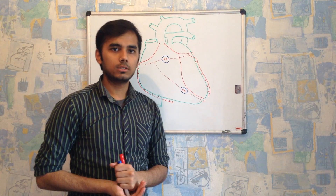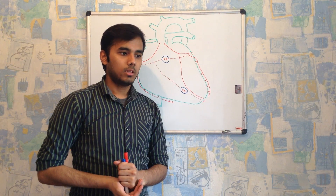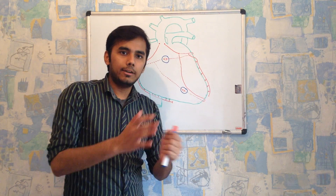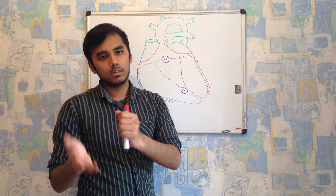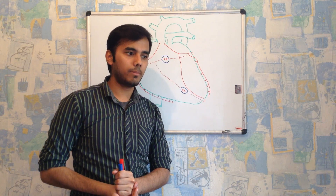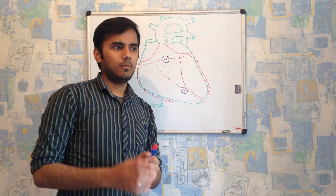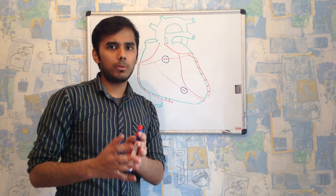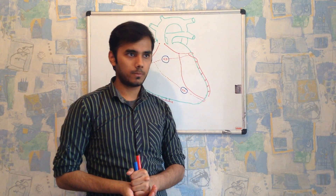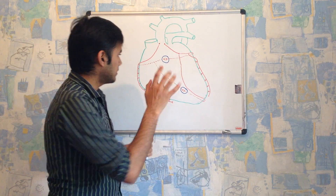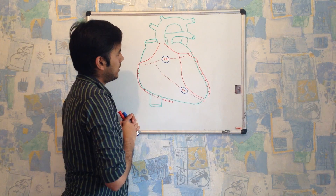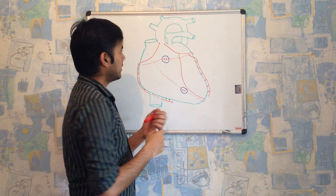One important thing to discuss: people say that the heart is right dominant for some patients and left dominant for others. In most of the population the heart is right dominant, but in a very small population the heart is left dominant. What is meant by dominance? This depends on the posterior interventricular artery.